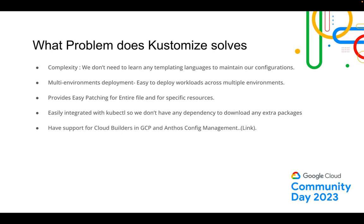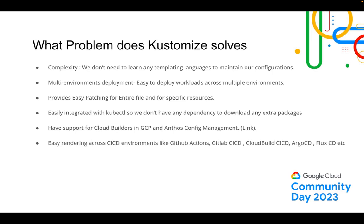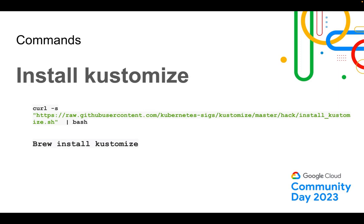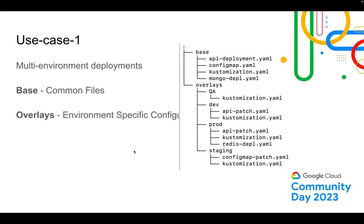Kustomize has support for Cloud Builders in GCP for CI/CD with Cloud Build, and also for Anthos Configuration Management in multi-cloud setups. It's easy for rendering across CI/CD environments like GitHub Actions, GitLab CI/CD, Cloud Build, ArgoCD, and Flux CD — it's used widely in CI/CD platforms today. To install Kustomize on Mac: 'brew install kustomize'. On Ubuntu systems, you can use a curl command followed by 'brew install kustomize'.